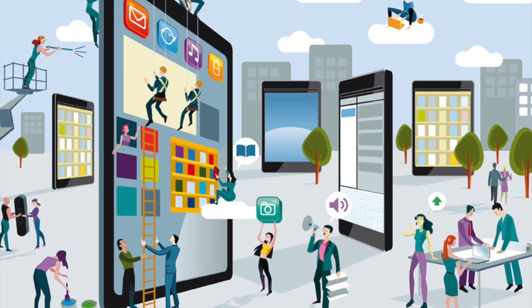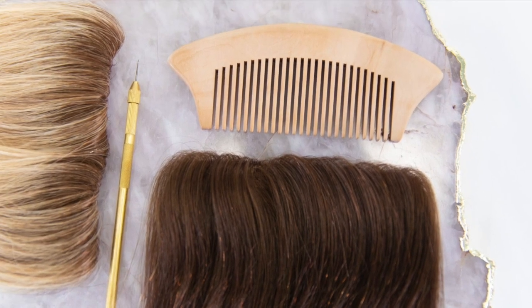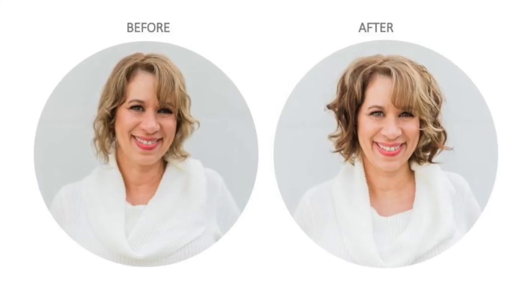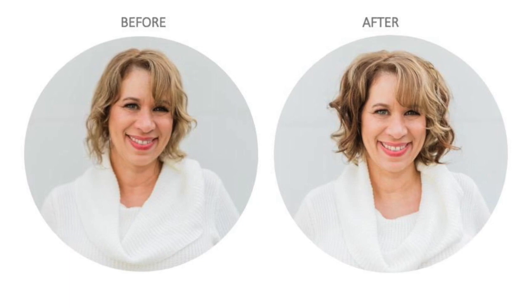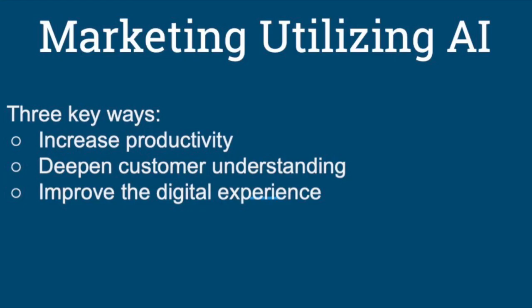AI enforces the anonymity effect. An example of this is butterfly clipping — many consumers do not want to admit that they actually have hair loss, so this can make people feel more comfortable with purchasing a product online. Three ways marketers are making strides with artificial intelligence in the UK are increasing productivity, deepening the customer understanding, and improving the digital experience.